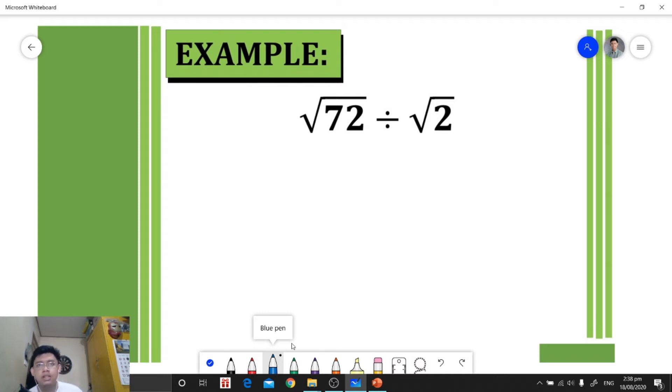We're going to divide 72 by 2, so we place them inside the radical symbol. 72 divided by 2 is 36. So what's the square root of 36? Let's simplify this. Square root of 36 is 6, and that will be our final answer.